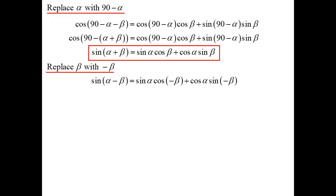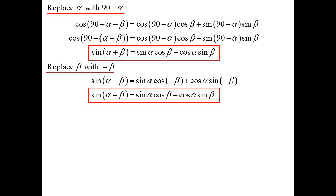Now in this new formula, I'm going to replace beta with minus beta. Sin(α − β) = sin α cos(−β) + cos α sin(−β). Using the properties of odd and even functions, we get sin(α − β) = sin α cos β − cos α sin β. Again, very similar formulas — the only difference is the sign, but this time it's the same sign. So sin(α + β) gives plus, and sin(α − β) gives minus.